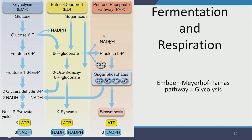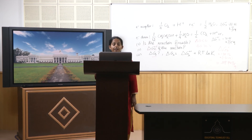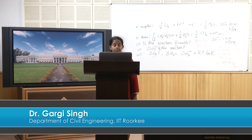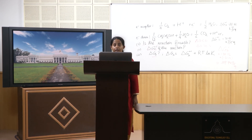In the next lecture, we will talk about fermentation and respiration — the two pathways through which microbes use their primary source of energy, glucose. They can either ferment it, which usually happens under anaerobic conditions, or they can respire it, which happens under aerobic conditions. That will conclude our microbial energetics. Thank you very much.